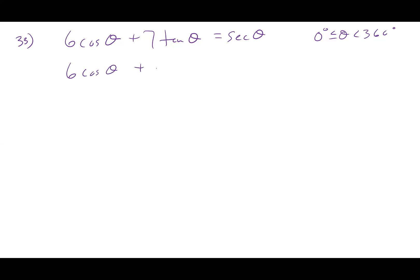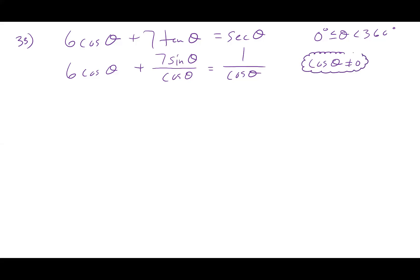Tangent is going to be seven sine over cosine, and secant is one over cosine. Notice I have cosines on the bottom of both fractions. So what would I do? I would get rid of my fractions. Before doing that, I'm going to declare that cosine theta cannot be equal to zero, because I can't multiply both sides of an equation by zero — and if cosine were zero, tangent and secant would be undefined.